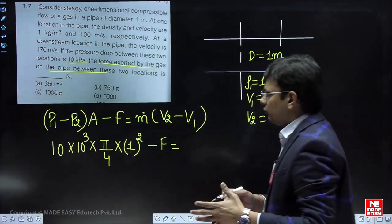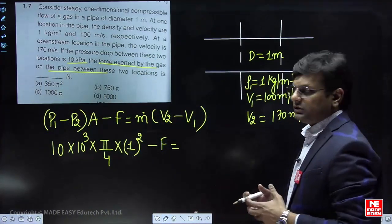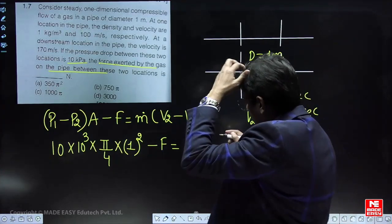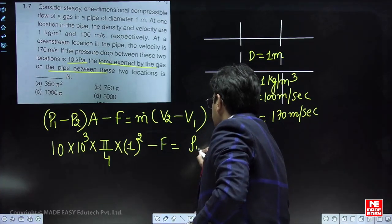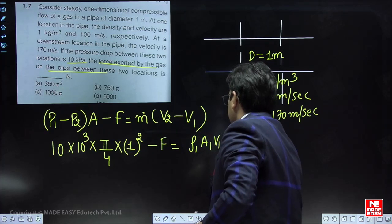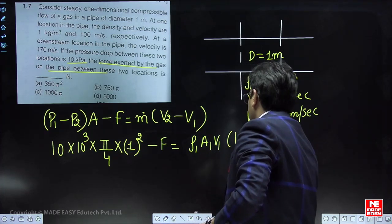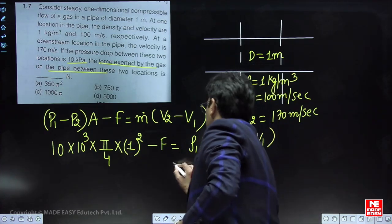The mass flow rate you can write as ṁ = ρ₁A₁V₁ or ρ₂A₂V₂ by using the continuity equation. So we can use ρ₁A₁V₁(V₂ - V₁).